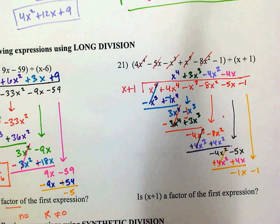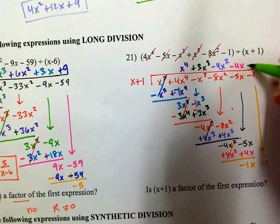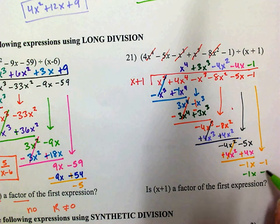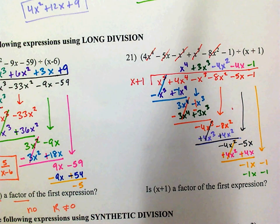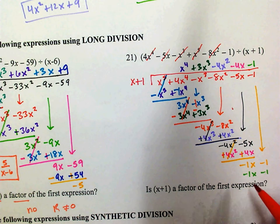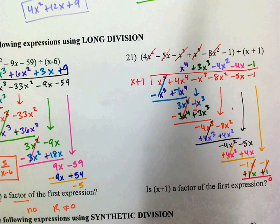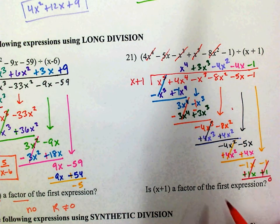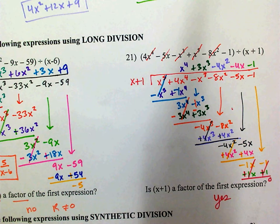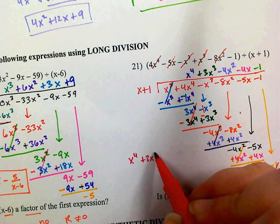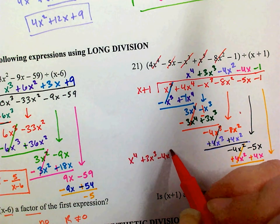I need negative 1x and I've got 1x, so I go negative 1. Negative 1 times x is negative 1x. Negative 1 times 1 is negative 1. Subtract — that makes those plus. Both cancel out and I'm left with 0. Is it a factor? Yes, because the remainder was 0. My answer is x to the 4th plus 3x cubed minus 4x squared minus 4x minus 1.